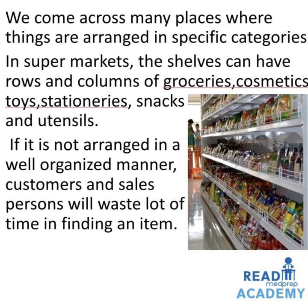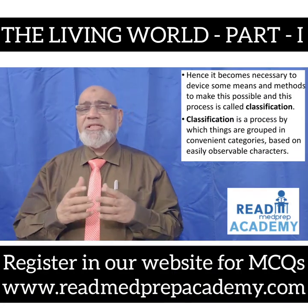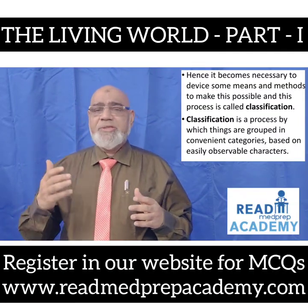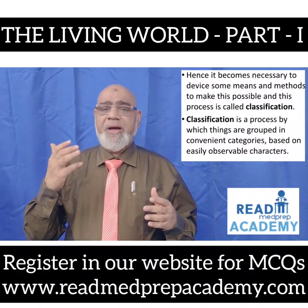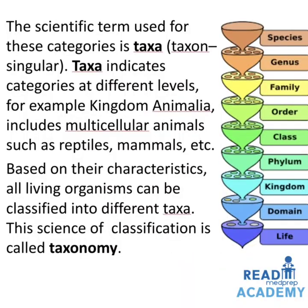We come across many places where things are arranged in specific categories. In supermarkets, shelves have rows of groceries, cosmetics, toys, stationeries, snacks, and utensils. If not arranged in a well-organized manner, customers and salespersons waste time finding items. Similarly, libraries organize books alphabetically into autobiographies, novels, kid stories, science fictions, etc. Likewise, it is nearly impossible to study all living organisms, so it becomes necessary to devise methods to make this possible. Classification is a process by which things are grouped into convenient categories based on easily observable characters. The scientific term for these categories is taxa — taxon is singular, taxa is plural.